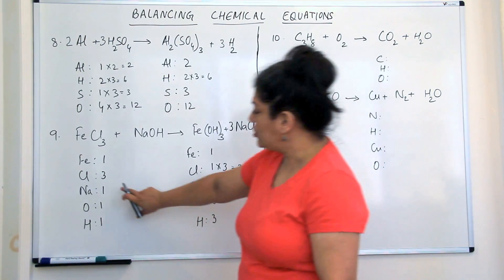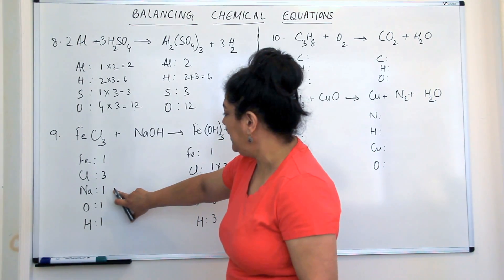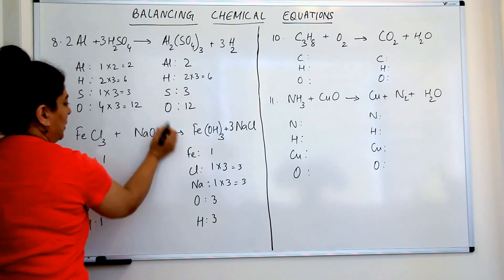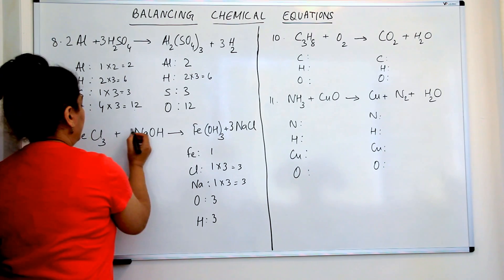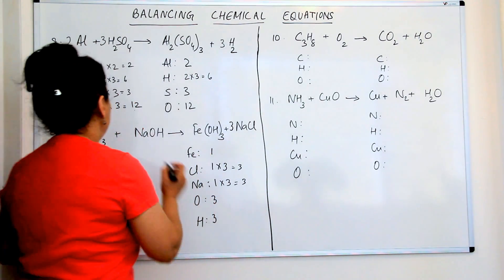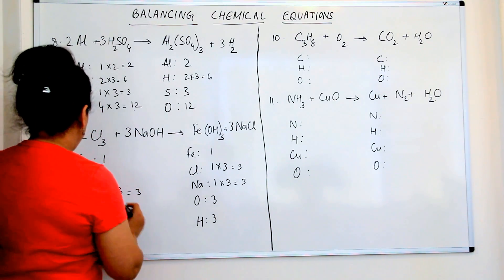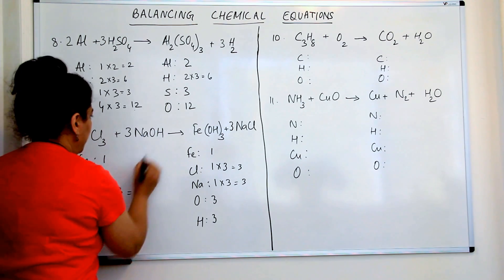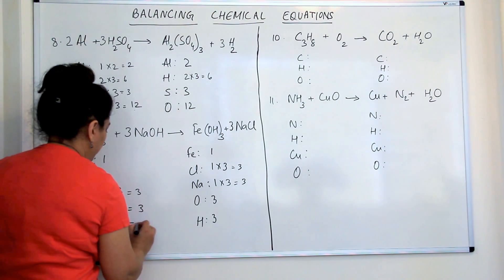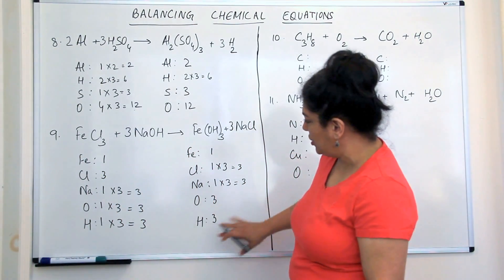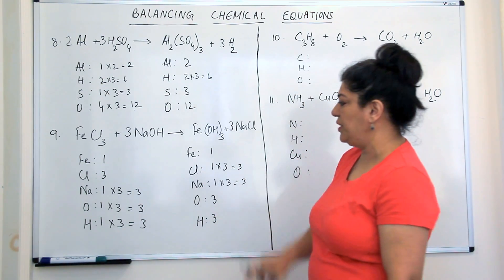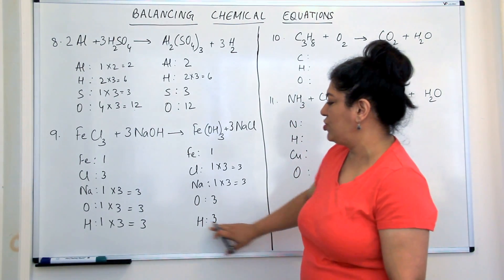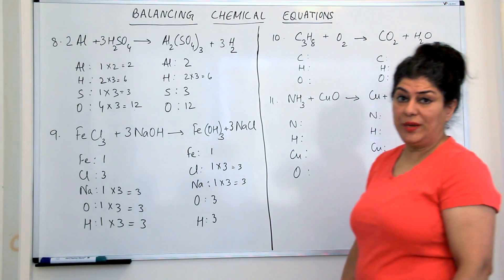So this coefficient becomes three. Now in order to balance sodium, I should multiply the sodium hydroxide by three as well. When I multiply it by three, I get three sodiums, but oxygens are automatically multiplied by three and hydrogens are also automatically multiplied. Iron is one on each side, chlorines are three on each side, sodium is three on each side, and oxygens automatically got balanced when I multiplied sodium hydroxide by three — we already had three on the product side and we got three on the other side too. Equation is balanced.